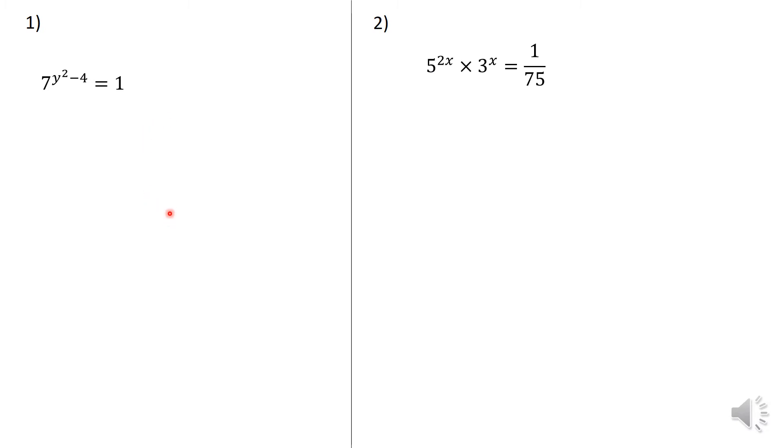So give it a try. And if you have done it, then you can play the video and see if you are on the same path. So the very first thing that I do here is I realize that this 1 can be written similarly as 7^0. The aim is I want to make the bases the same. And once the bases are the same, I can drop the bases and only equate the indices. That is y²-4 = 0.